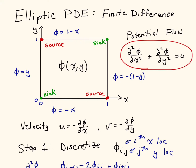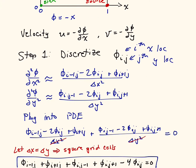We're going to continue our problem of solving the potential flow in a square, which is an elliptic partial differential equation. Here's the problem introduced in the last video. At the end of the last video, we came up with this discretization shown at the very bottom: phi_(i-1,j) + phi_(i+1,j) + phi_(i,j-1) + phi_(i,j+1) - 4*phi_(i,j) = 0. Now we need to write this in a big matrix to solve for our unknown potentials, the phi's.